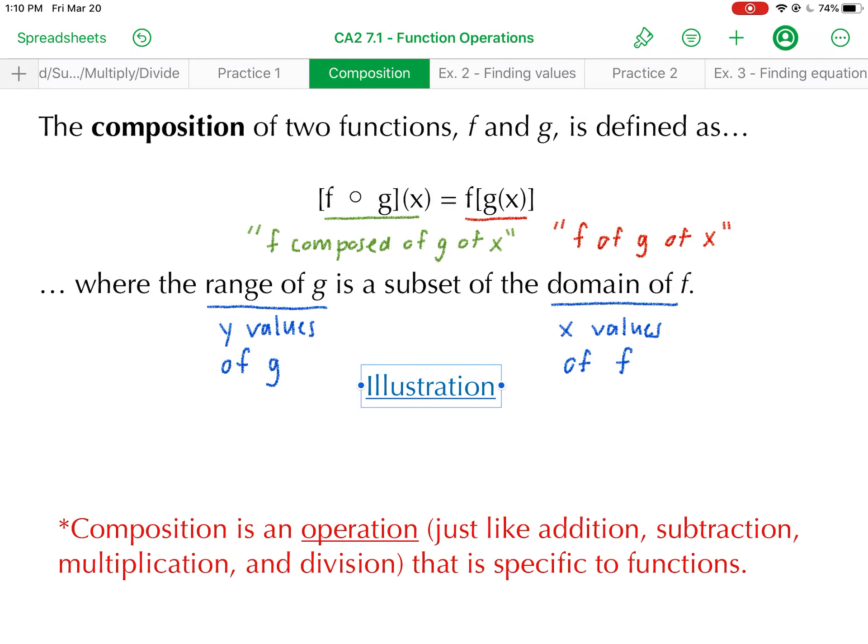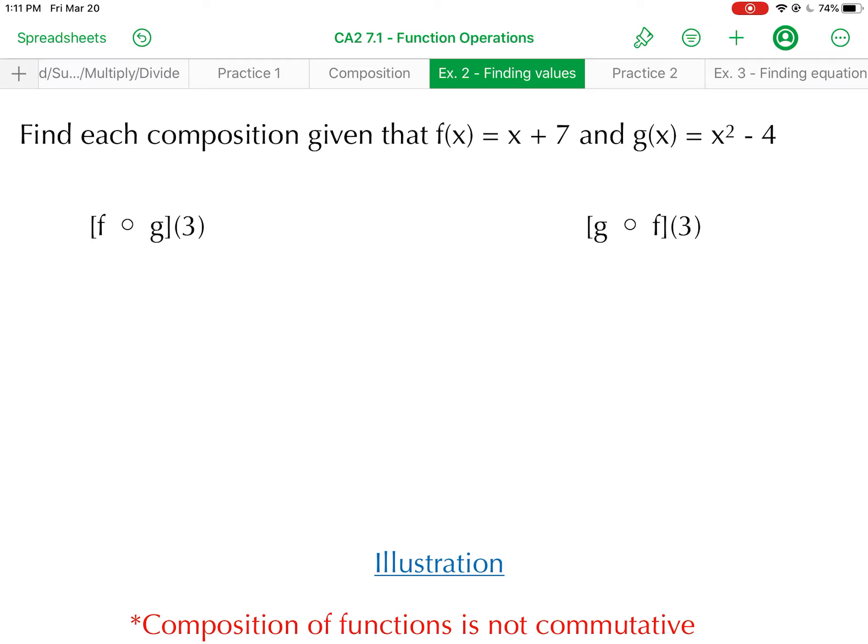I think it's extremely important to understand that composition is a type of operation, just like addition, subtraction, multiplication, and division. The only difference is composition is specific to functions. You cannot find the composition between real numbers. You can only find the composition between two functions, just by the very definition of it. All right, let's get into an example of our own.